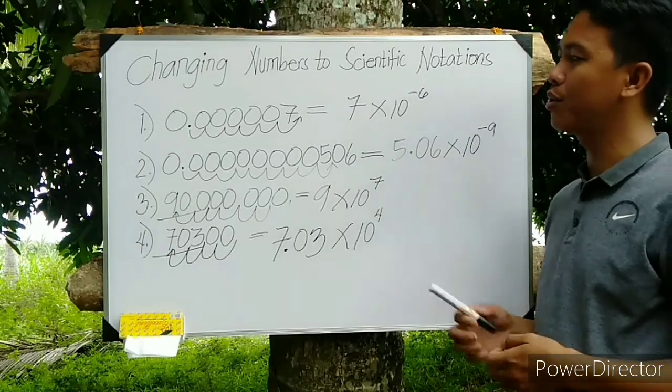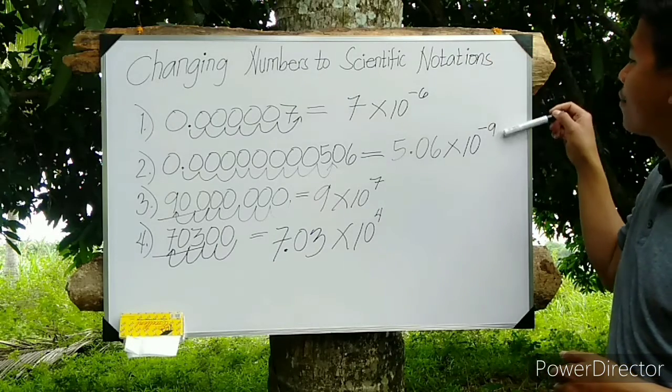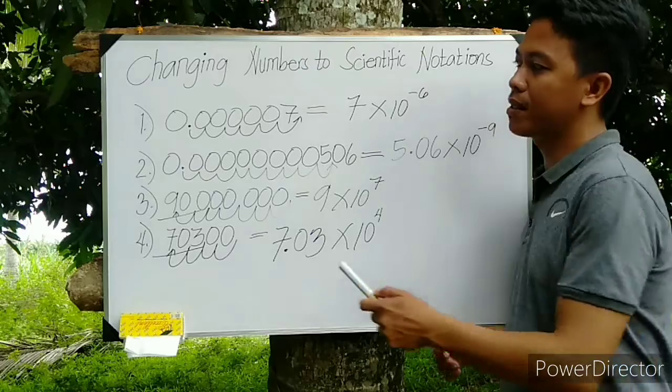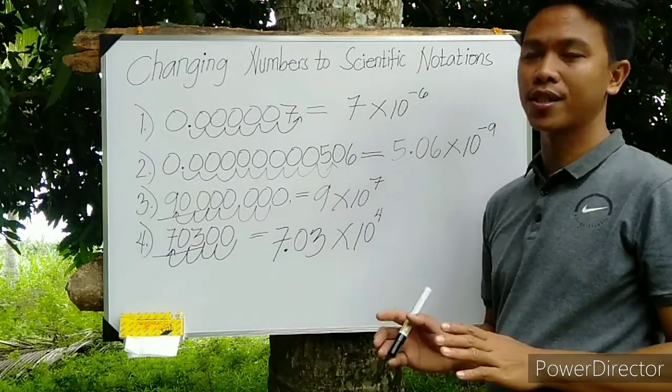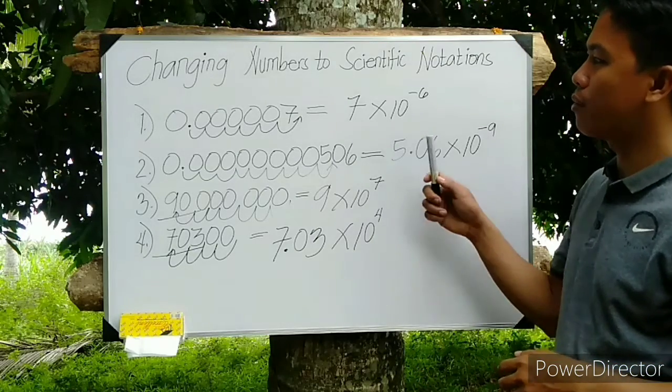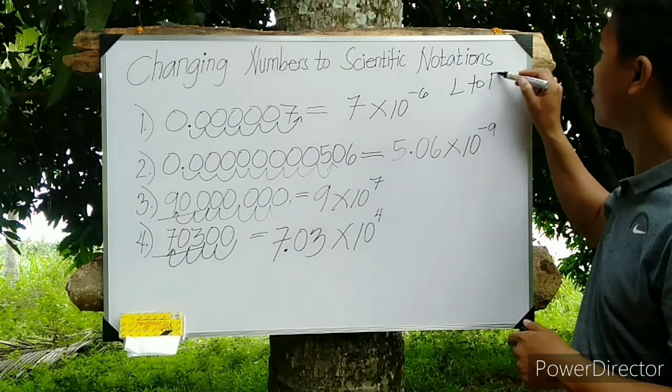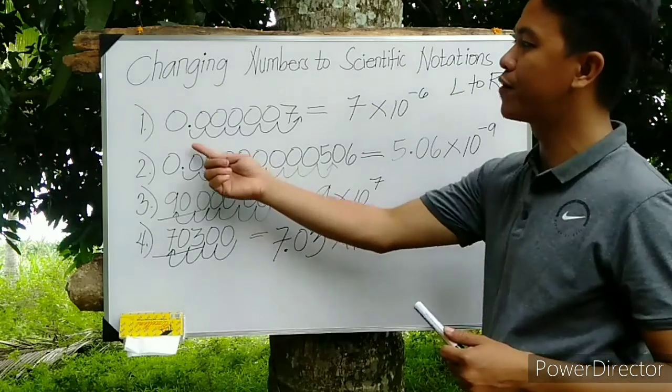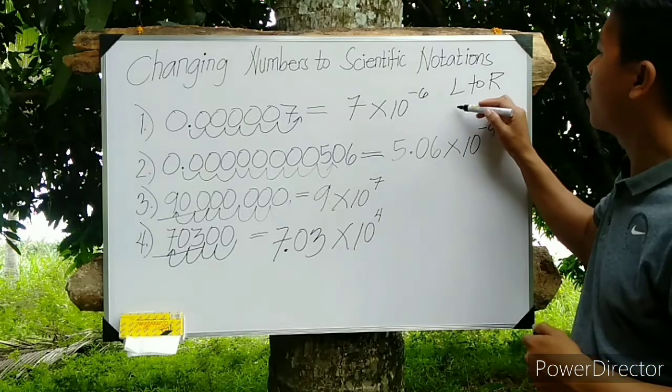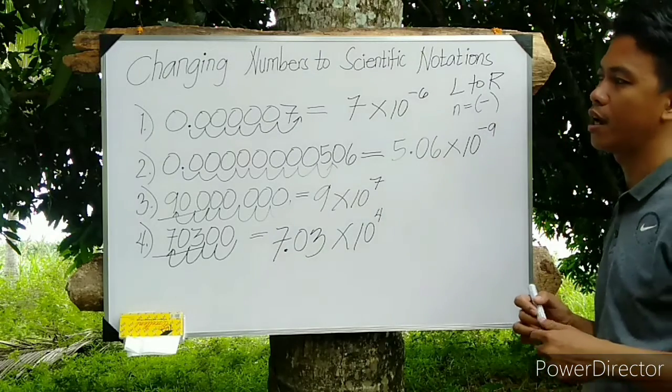Now let's go back to number 1 and number 2. Why are the powers here negative integers? First reason is the problems in number 1 and 2 are small numbers, which means less than 1. The second reason is we move from left to right. As you can see, we moved from the decimal going to the right. And the third reason is the power is equal to negative integer.